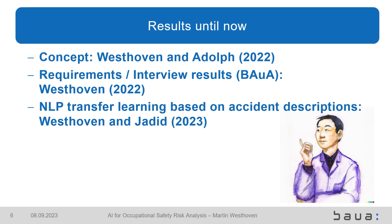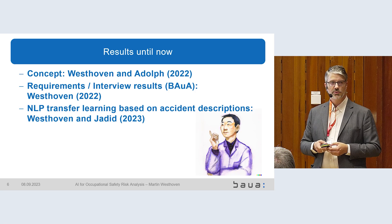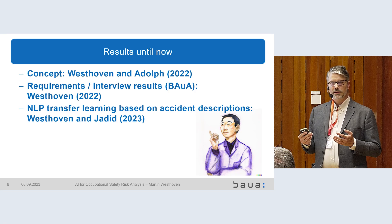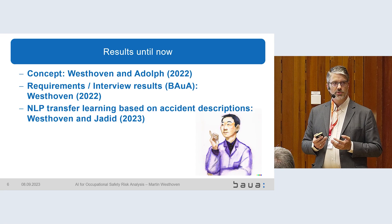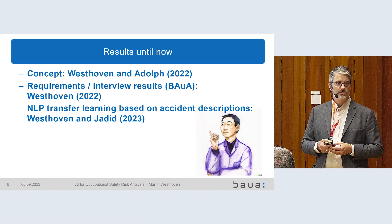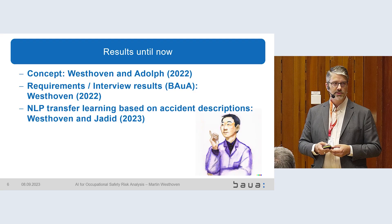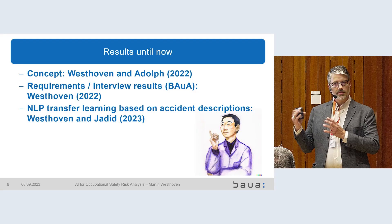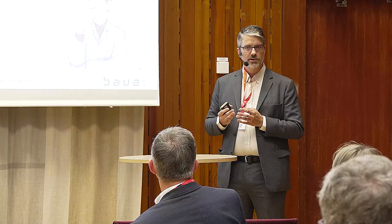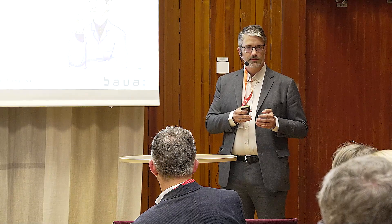Moving to a more interesting part: NLP, natural language processing. I mentioned the main body of data is text, so NLP is really the family of AI approaches we need to dive into. We have to process text data, more or less structured and more or less digitalized. We are trying to address this by targeting accident descriptions, with the ultimate goal of targeting workplace descriptions that should be in hazard assessments but are not.